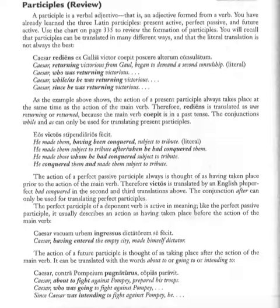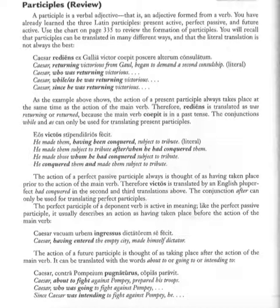For example, victus meaning conquered, amatus meaning loved, doctus meaning taught or having been taught. That one equals the past participle or 'having been verbed' in English. Then the last normal type of participle in Latin would be the future active participle, the one that ends in -urus. You take the fourth principal part, drop off the -us or -um ending, and turn that into -urus. The -ur is the key thing that will help you recognize the future participle.